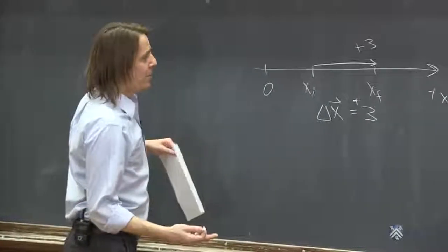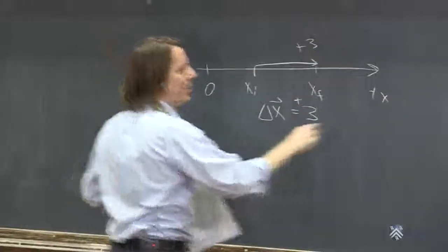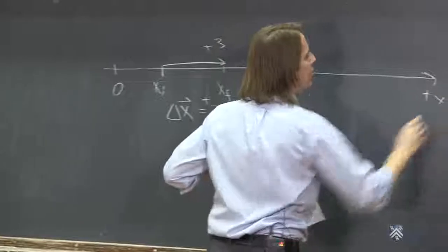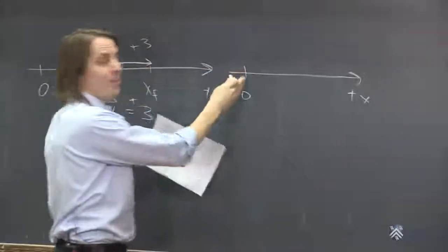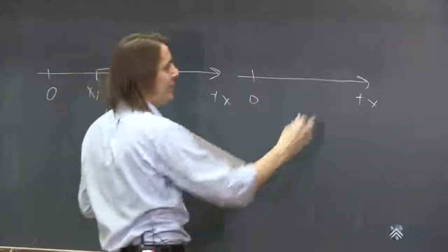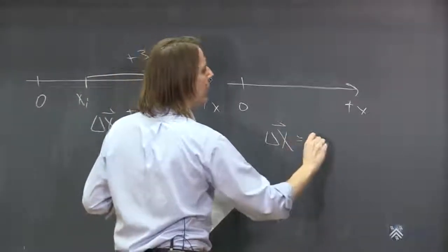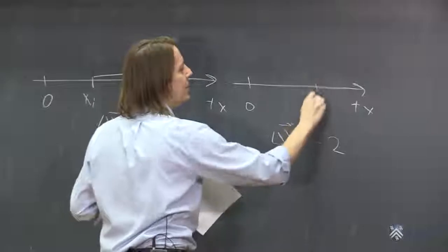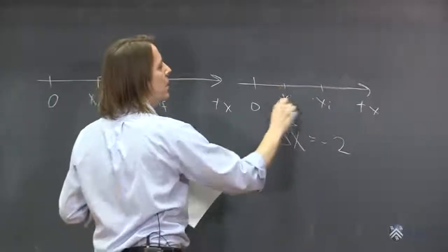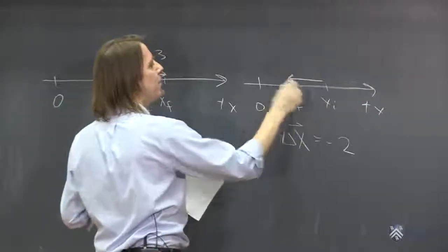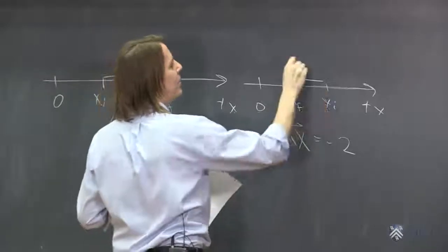If you get a negative value, then it would be the other way. We could also have plus x, there's the origin, doesn't actually matter where the origin is when you're talking about displacements, because they're just a change. But let's say delta x equals minus 2. That would be a case where you have an initial here, and a final here, and the vector from initial to final points that way, minus 2.